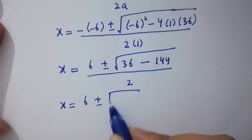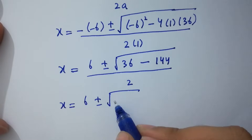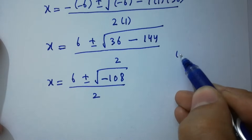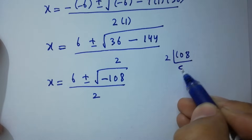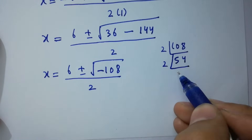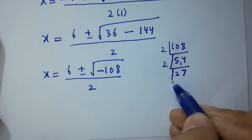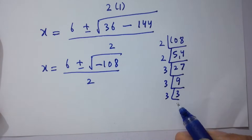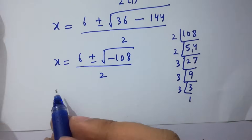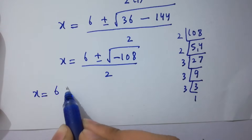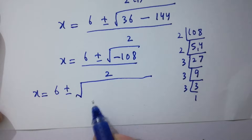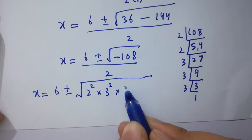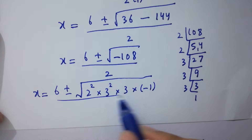So we have x equals 6 plus or minus the square root of negative 108, over 2. To simplify, we find the factors of 108: 108 equals 2 squared times 3 squared times 3. Therefore, x equals 6 plus or minus the square root of 2 squared times 3 squared times 3 times negative 1, all over 2.